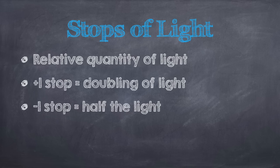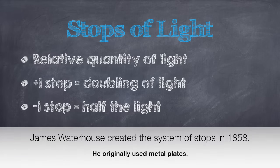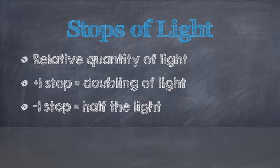To put it simply, if the exposure is darker than desired, increasing the quantity of light by one stop will brighten the image. Conversely, if the exposure is lighter than desired, decreasing the quantity of light by one stop will darken the image.